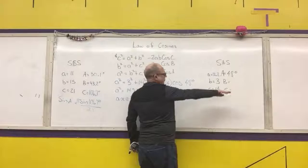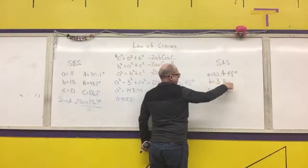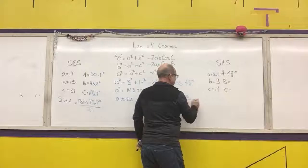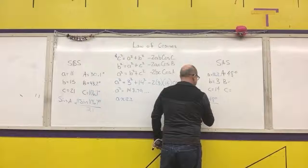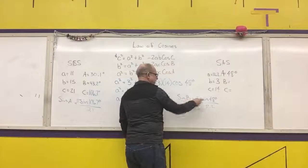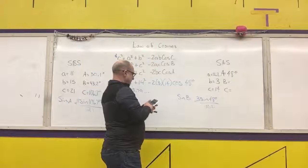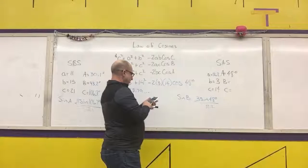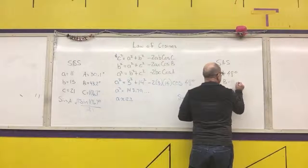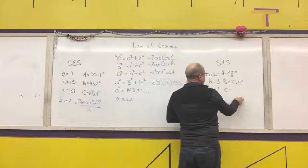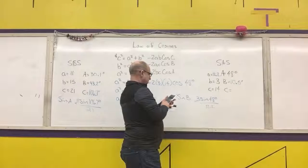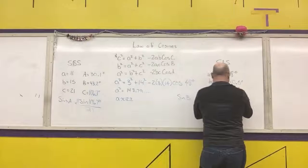From this point, use a proportion with the law of sines. Sine of B over 3 equals sine of 48° over 12.2. Multiply both sides by 3 and take the inverse sine: inverse sine of (3 × sine 48° / 12.2) gives 10.5°. Then find the third angle using the triangle sum: 180 minus 48 minus 10.5 equals 121.5°.